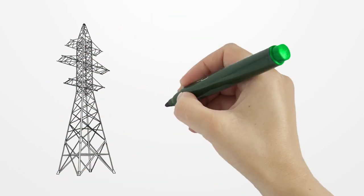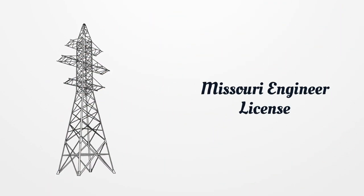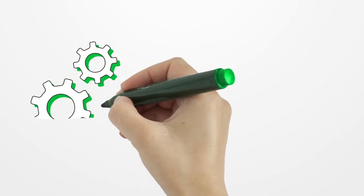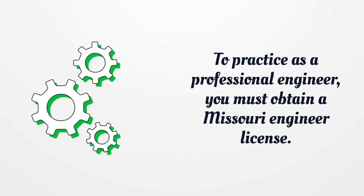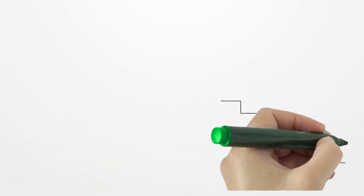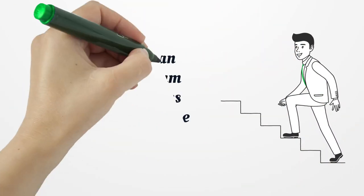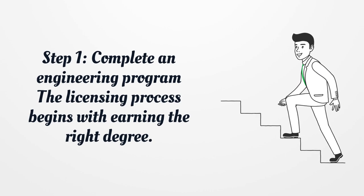Missouri Engineer License. To practice as a professional engineer, you must obtain a Missouri Engineer License. Step 1: Complete an engineering program. The licensing process begins with earning the right degree.